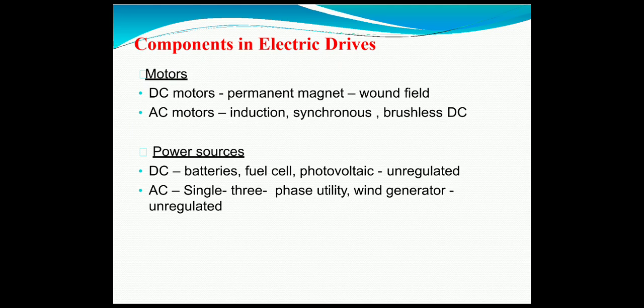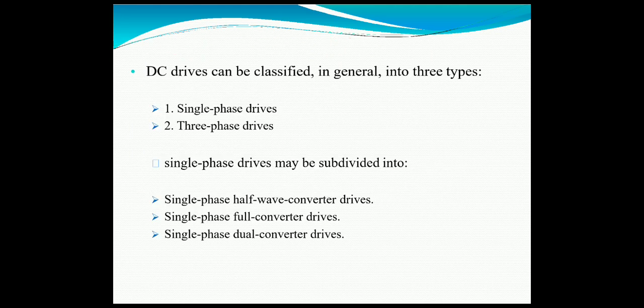The power sources for DC motors are batteries, fuel cells, and photovoltaic sources. For AC supply, it may be single phase or three phase. DC drives are further classified into two types: single-phase drives and three-phase drives. Single-phase drives may be subdivided into single-phase half-wave converter drives, single-phase full-wave converter drives, and single-phase dual converter drives.